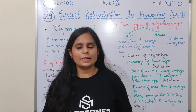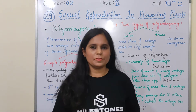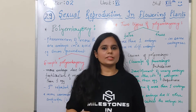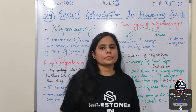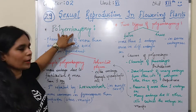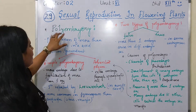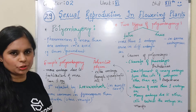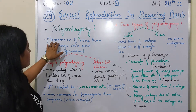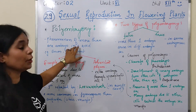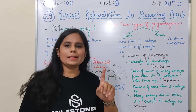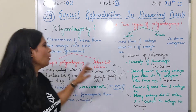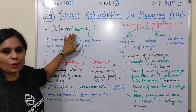Hello everyone, let's start with today's video. Today we are going to talk about polyembryony. This is the last topic of your second chapter. Polyembryony condition — poly means many embryos. It is the phenomenon of more than one embryo in one seed. We call this state polyembryony.